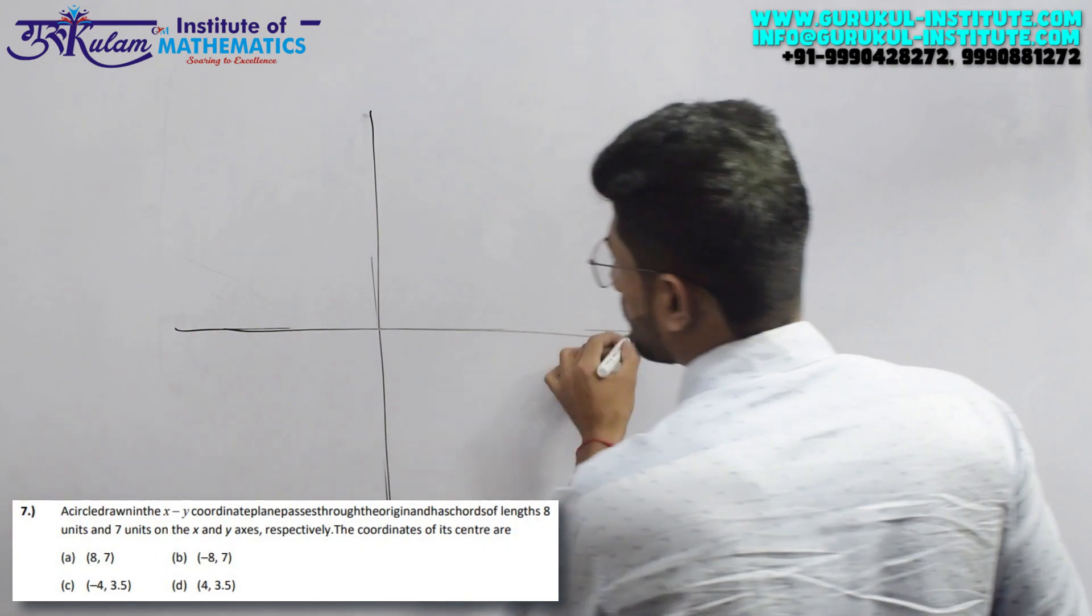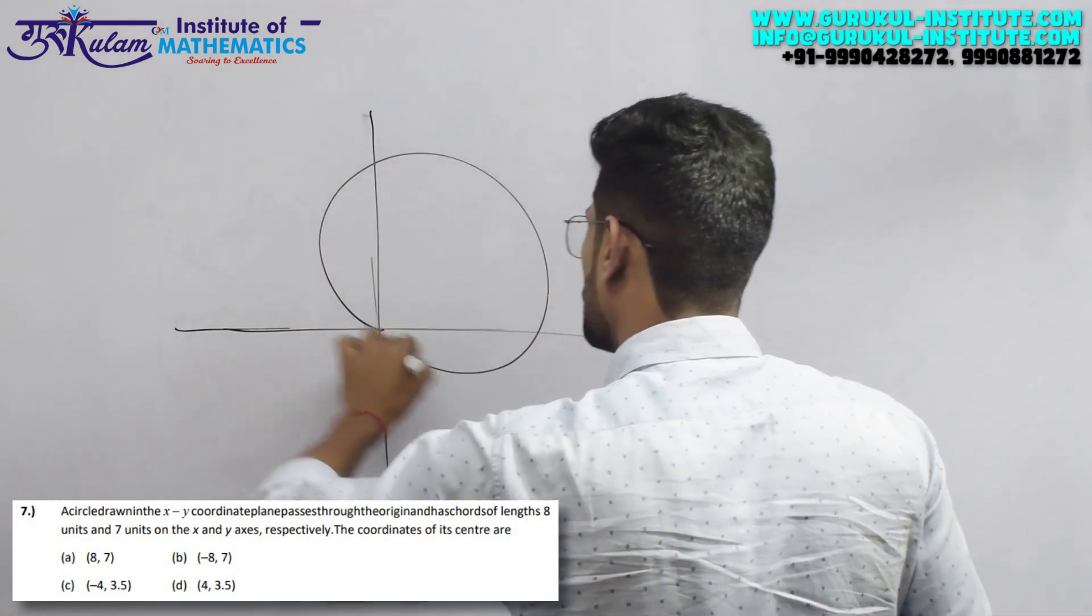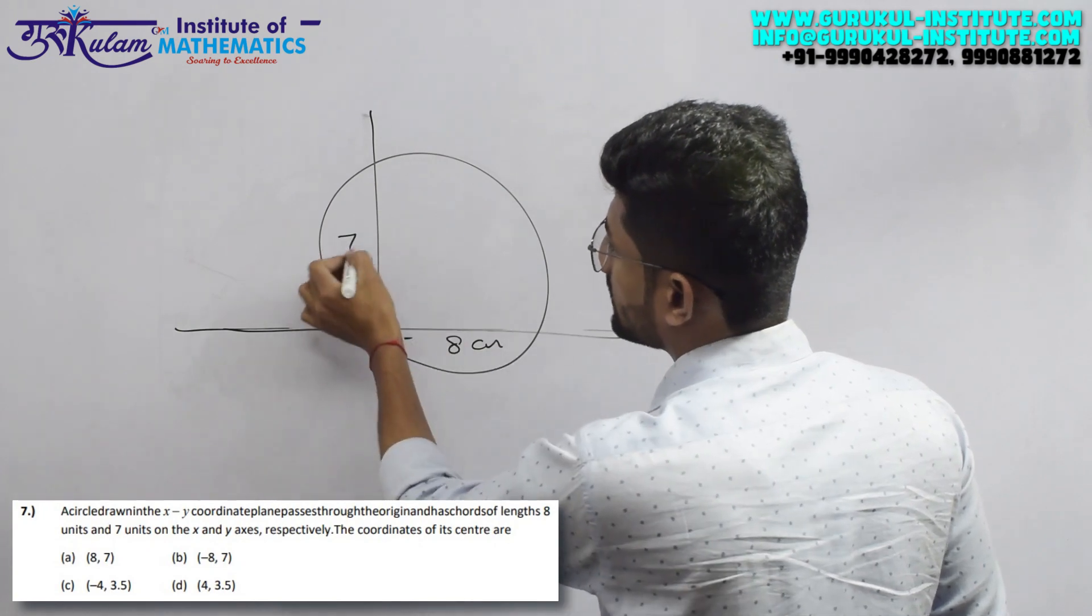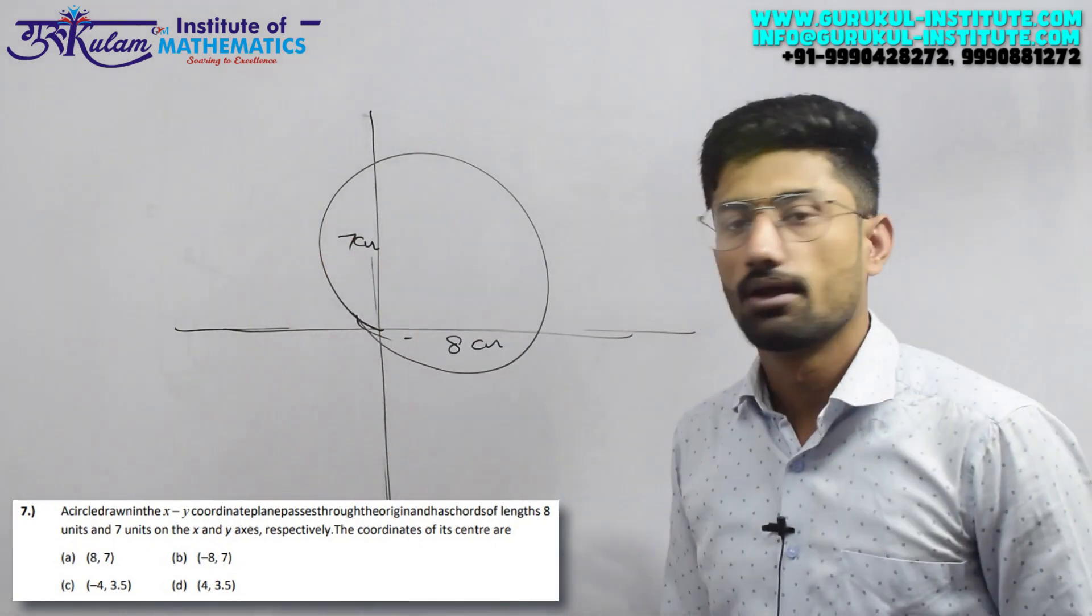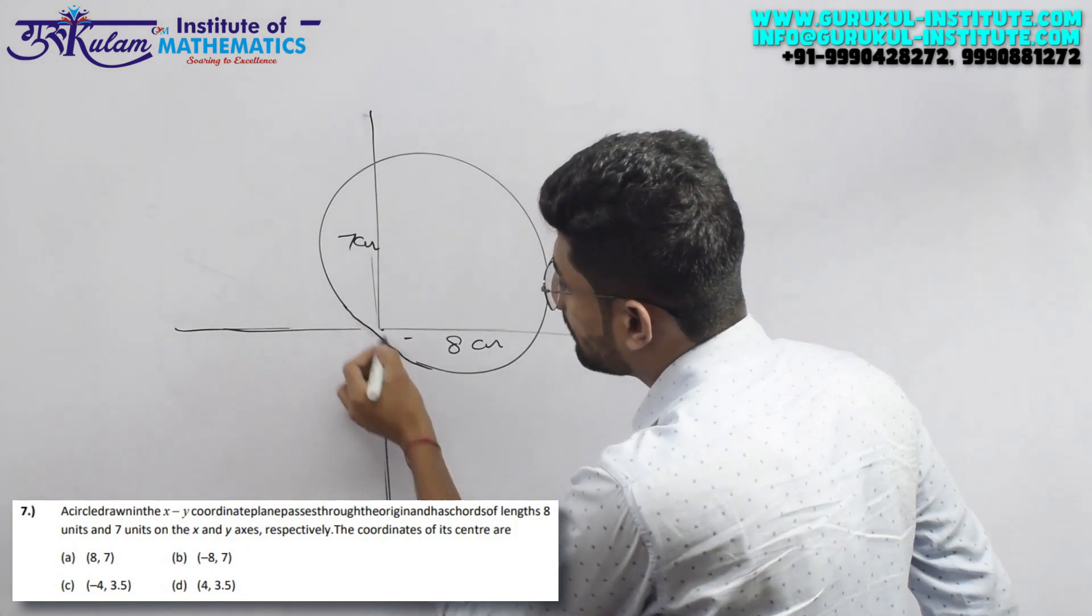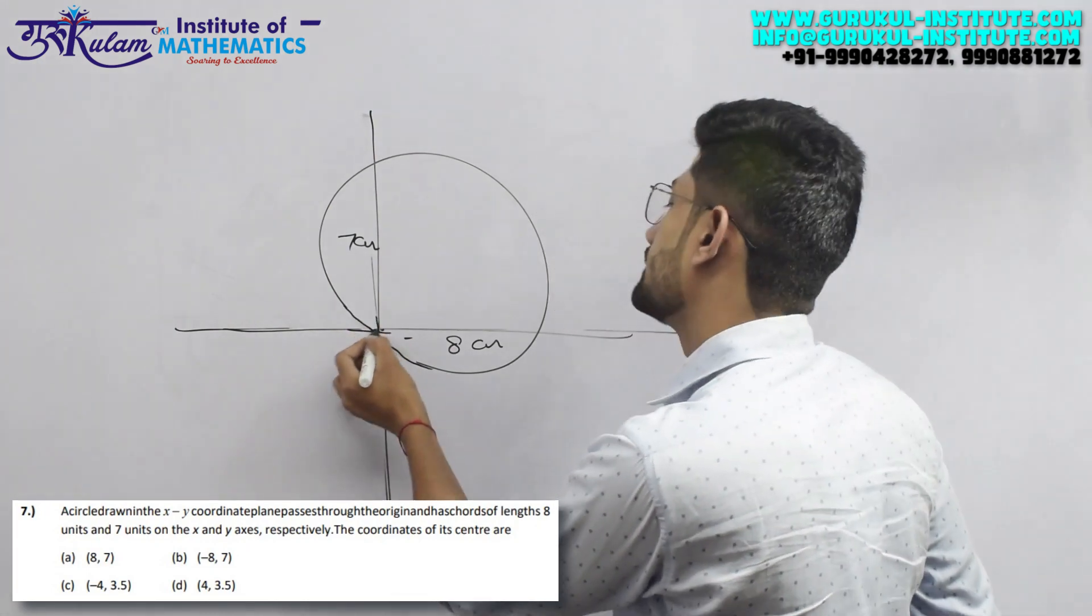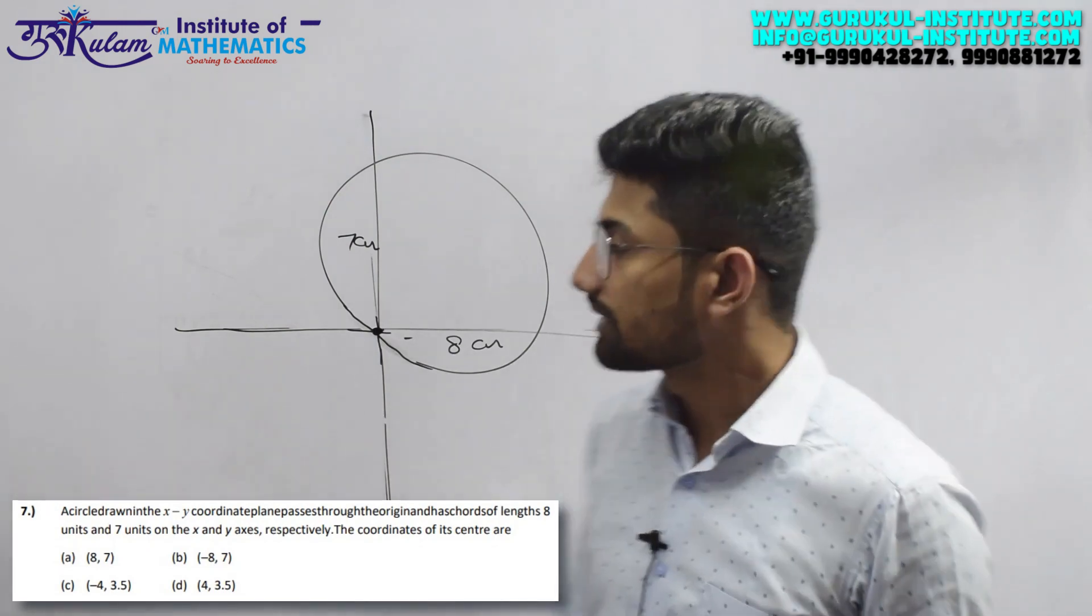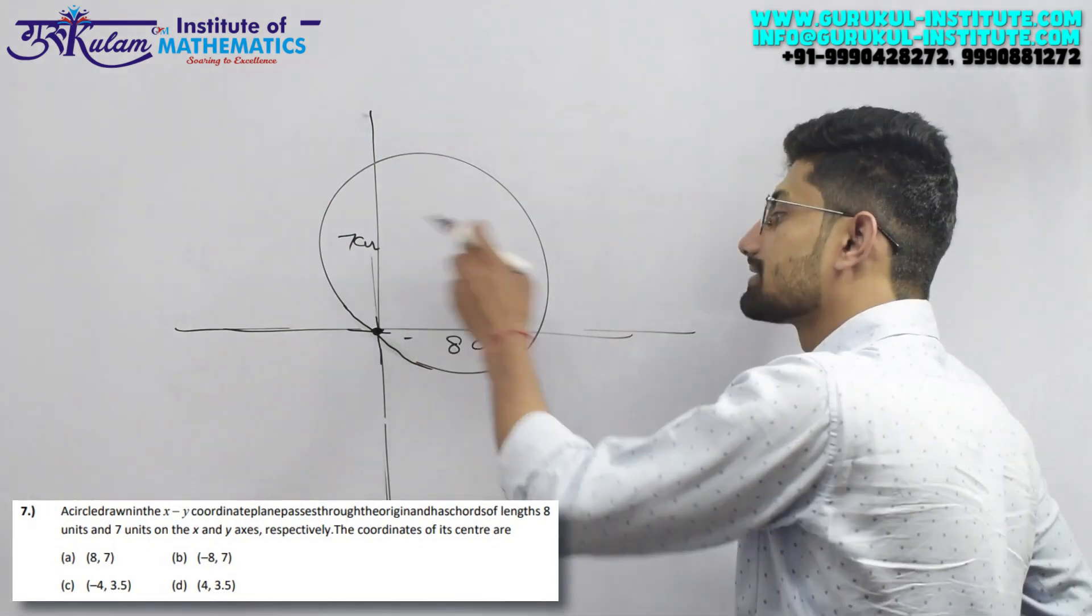Passing through the origin means that the point at the origin will be on the circumference. Now if the point is on the circumference, between the X axis and Y axis the angle is 90 degrees.